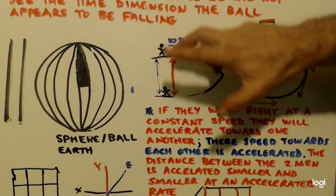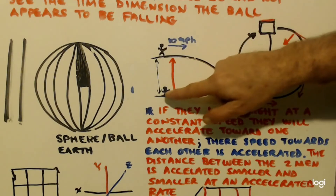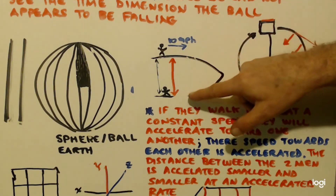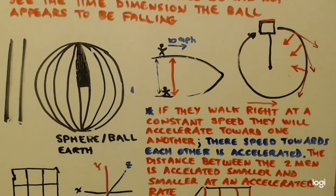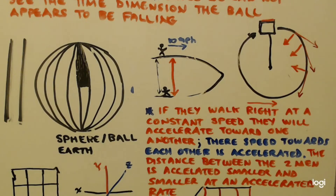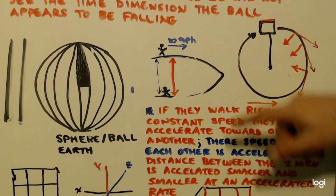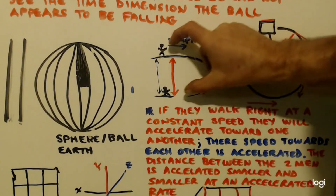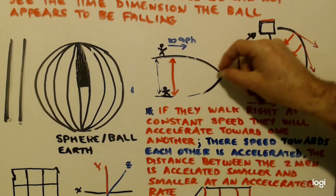There's a speed — at first it'll be, say, one mile per hour towards each other. Then another second goes by, now it's one mile plus X. Another second goes by, now it's one mile plus two X. The third second goes by, now it's one mile per hour plus three X. And they keep accelerating towards each other. If they walk at a constant speed, they will accelerate towards one another. Their speed towards one another is accelerated — the distance between the two men gets smaller and smaller at an accelerated rate. Just like when you fall, you accelerate towards the ground — every second you speed up nine meters per second. This is the same type of acceleration.